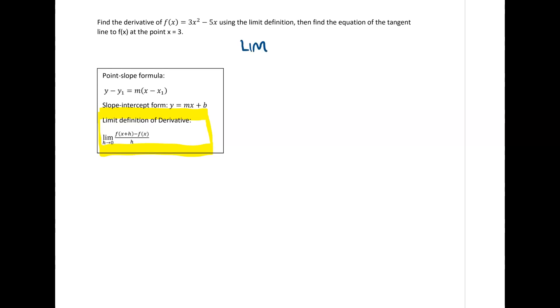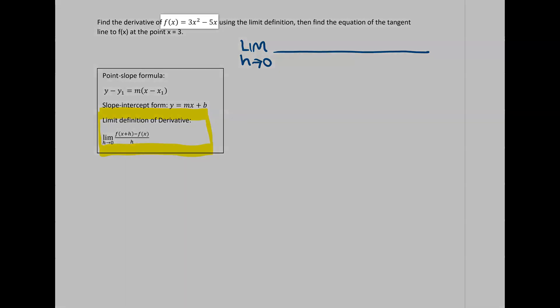We're going to take the limit as h goes to 0 of f of x plus h. So to find f of x plus h we take our x plus h and we put it into our function.